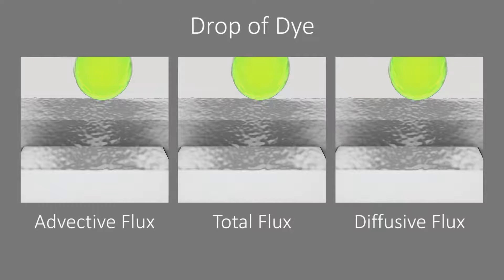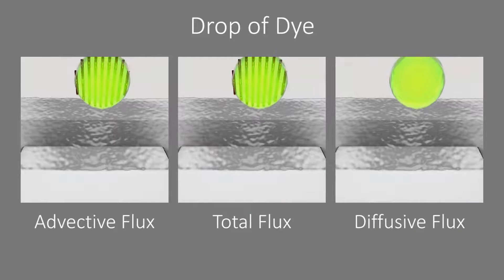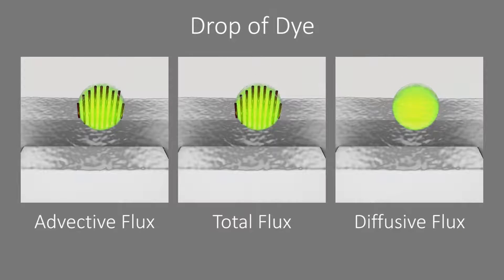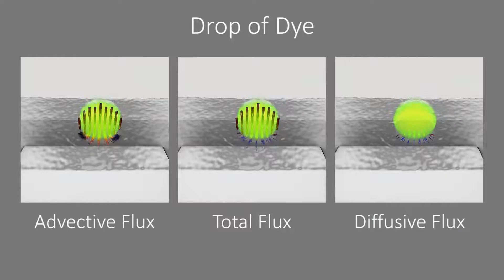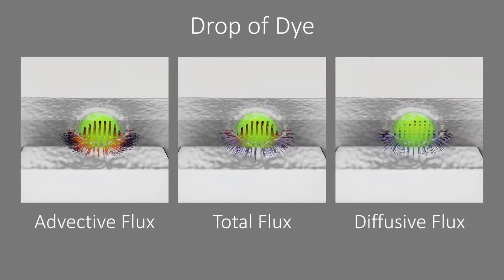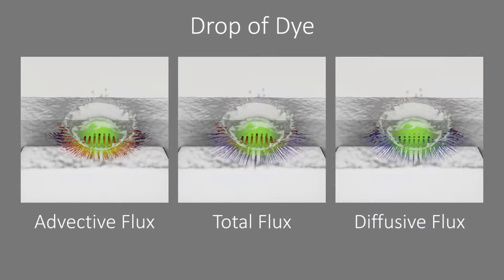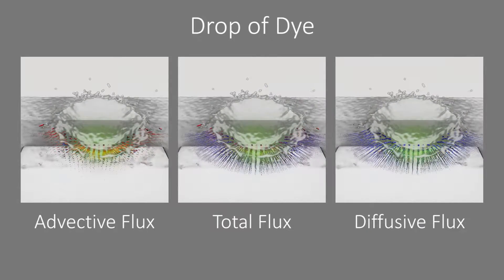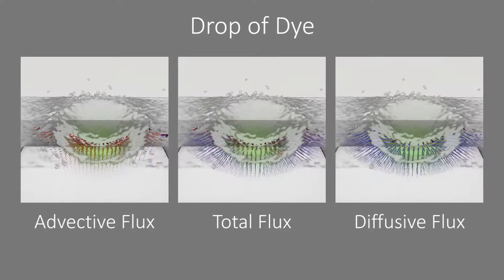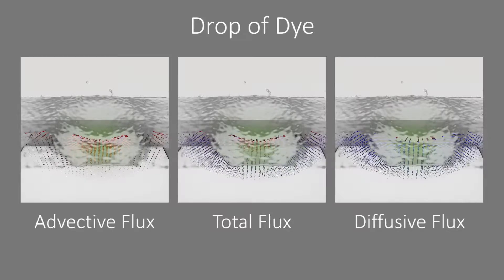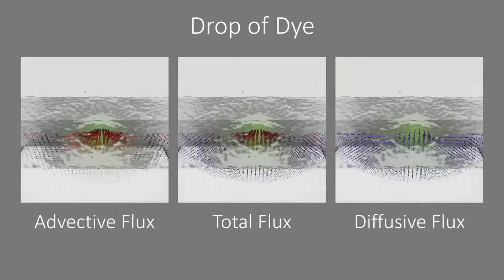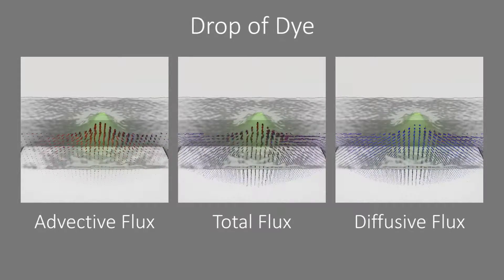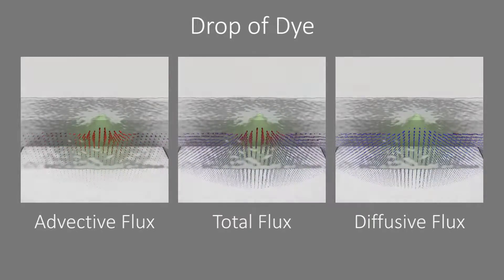When a drop of dye is falling into a tank of solvent, advection first dominates the flow. After impact, dye diffuses symmetrically from the site of impact. To convey the magnitude of flux, the transported concentration is mapped to the thickness of the streamlines.